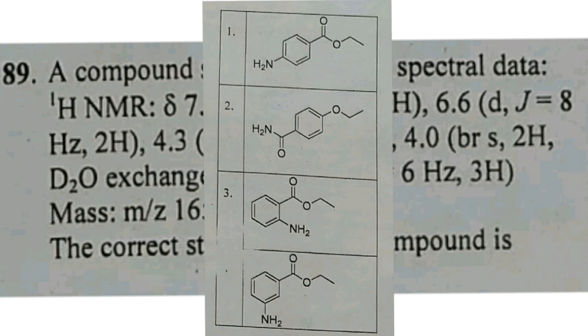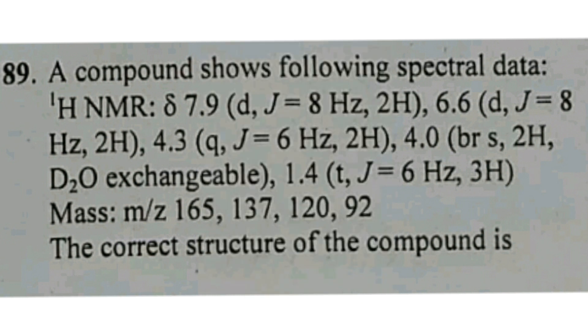Since it is a para compound, options 3 and 4 are eliminated. Looking at the other H1 NMR values, there will likely be confusion between options 1 and 2.